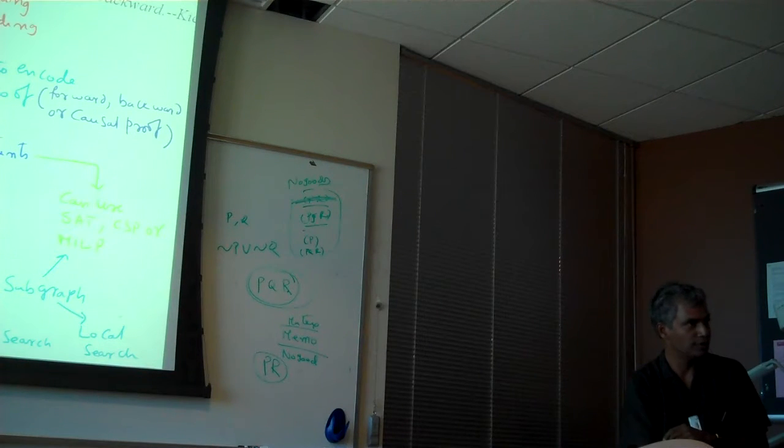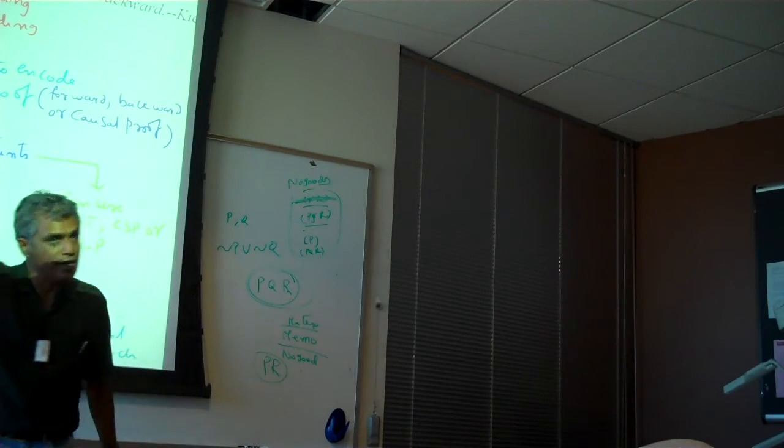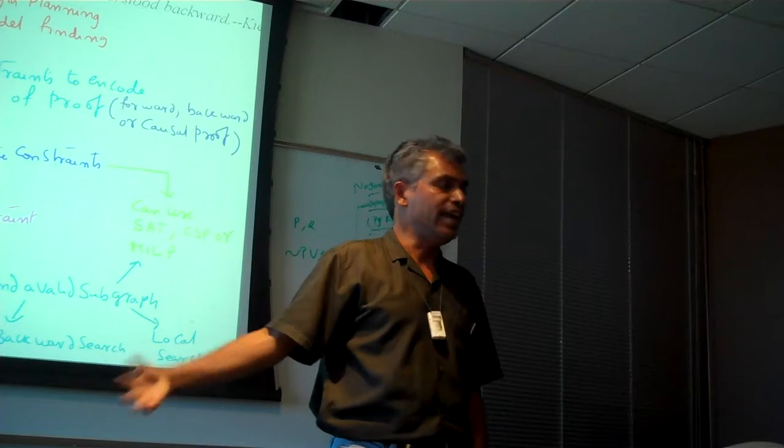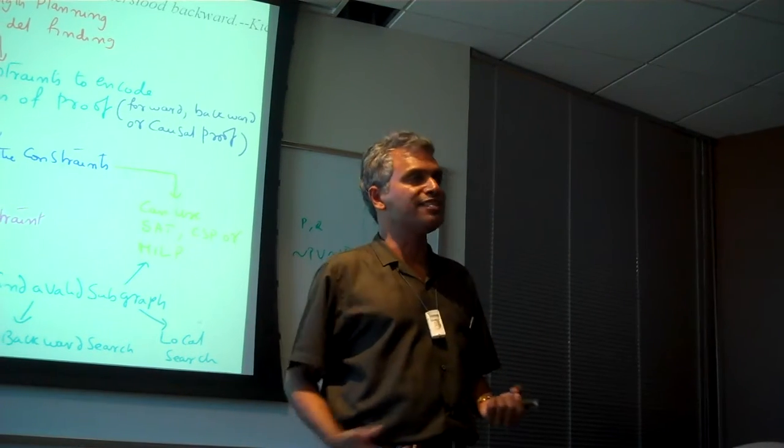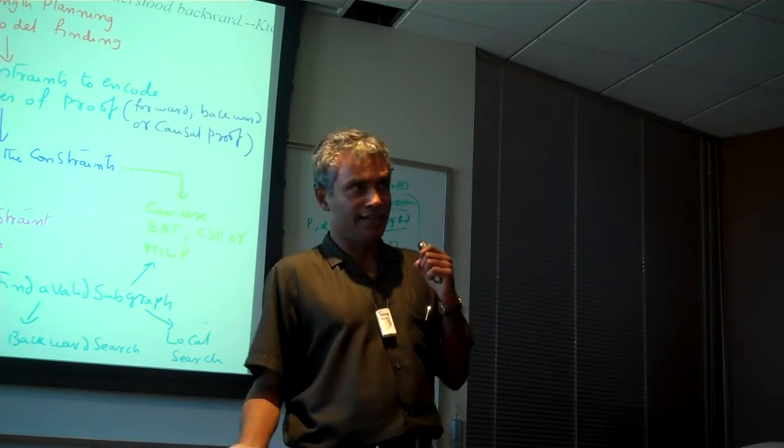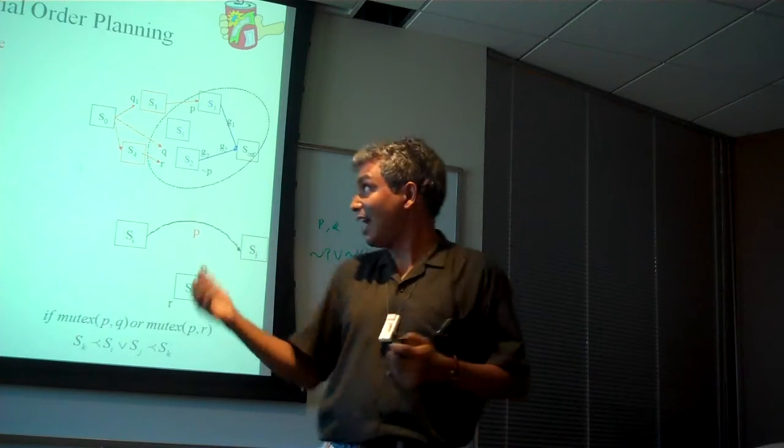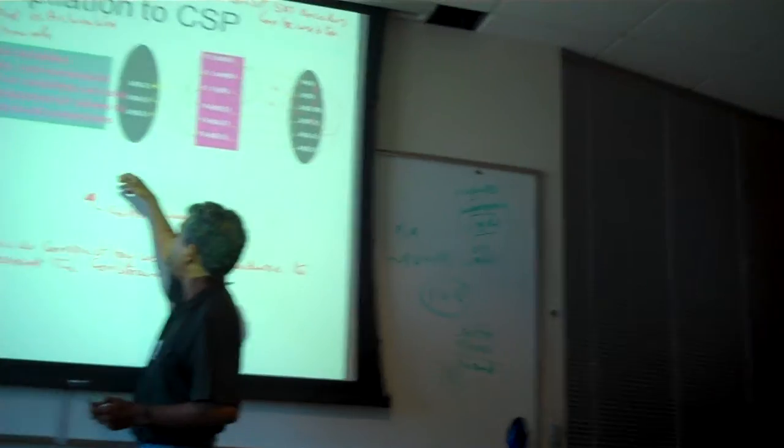Originally Kautz and Selman tried forward proof-based SAT encoding, then they tried regression proof-based SAT encoding. Then they wrote a paper saying causal proof-based SAT encoding will be smaller than either forward or backward proof. While people were realizing that you can also convert planning graph directly into a proof.